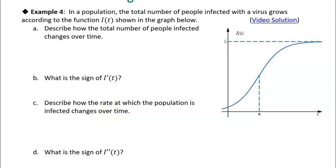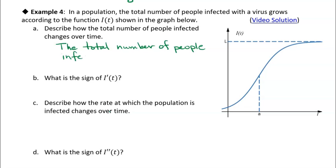In this example, we're given a curve for I of T, and I of T represents the number of people infected with a virus over time. The first question asks us to describe how the total number of people infected changes over time. We can see that I of T is increasing, so the total number of people infected increases over time.